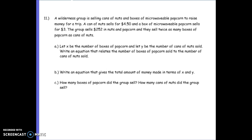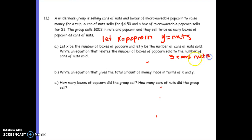They're actually giving us the let statement. So let X be the number of boxes of popcorn and let Y be the number of cans of nuts sold — X is popcorn and Y is nuts. Write an equation that relates the number of boxes of popcorn sold to the number of cans of nuts sold. If I had three cans of nuts, then twice as many boxes of popcorn would be six. So popcorn equals twice my nuts: X equals 2Y.